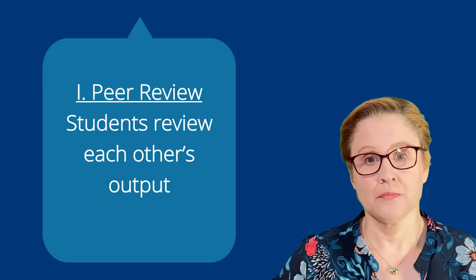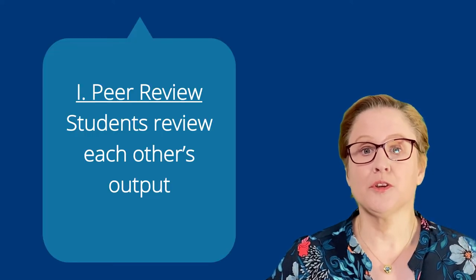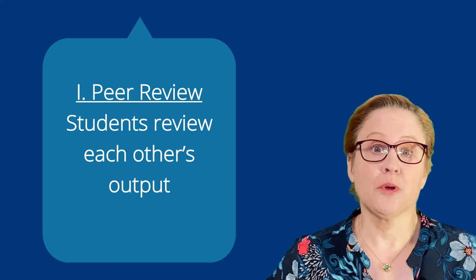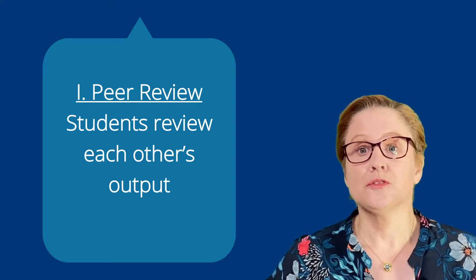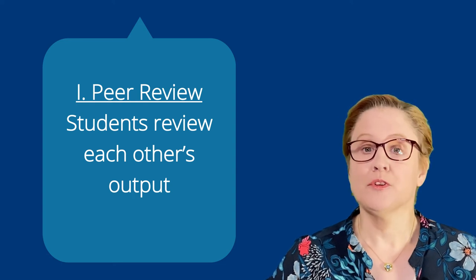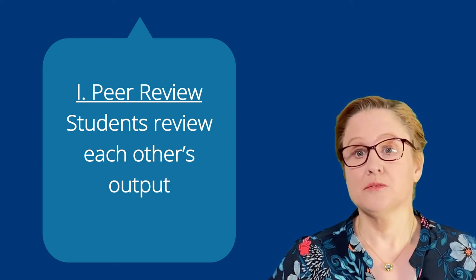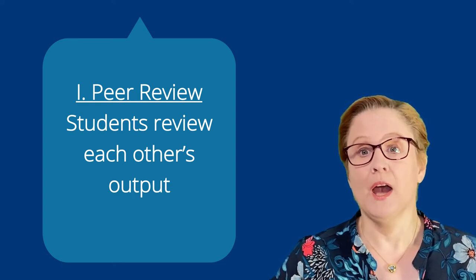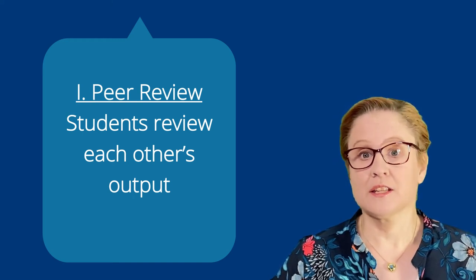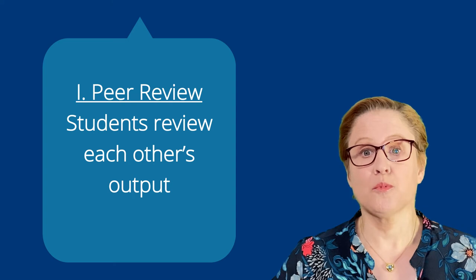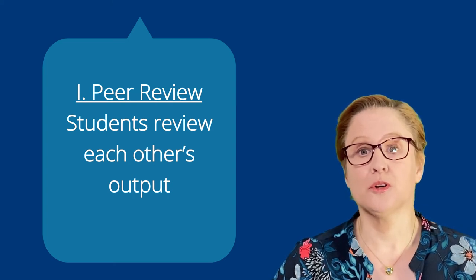Globally, you can divide peer assessment into three different types, each with its own characteristics. The first type is peer review, which is similar to the review process carried out in the publication of scientific articles. Students review each other's output and provide each other with feedback, which the receiving party can learn from and/or improve their work. Outputs that are assessed can be anything from essays and reports to prototypes or computer code.